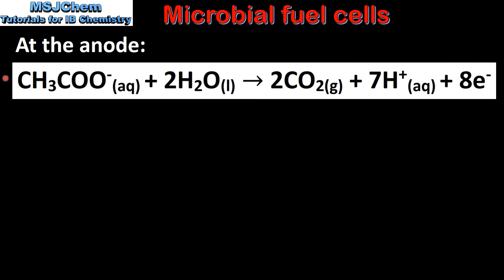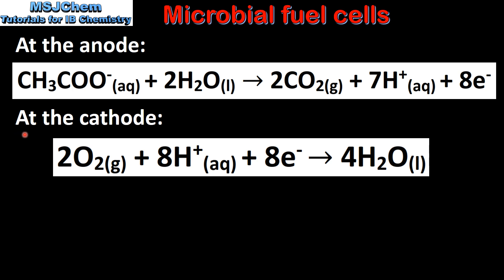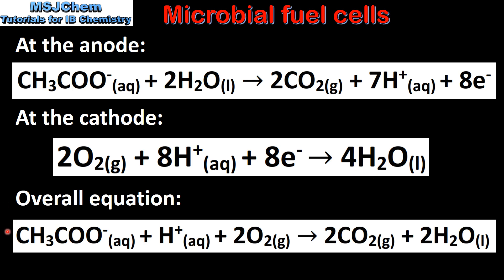Here we have the half equation that takes place at the anode in a microbial fuel cell. Ethanoate ions are oxidized to form carbon dioxide, hydrogen ions and electrons. At the cathode, oxygen gas is reduced to form water. And here we have the overall equation for the reaction.